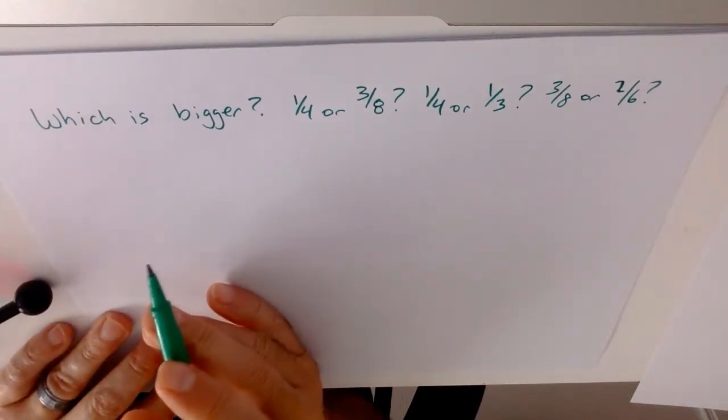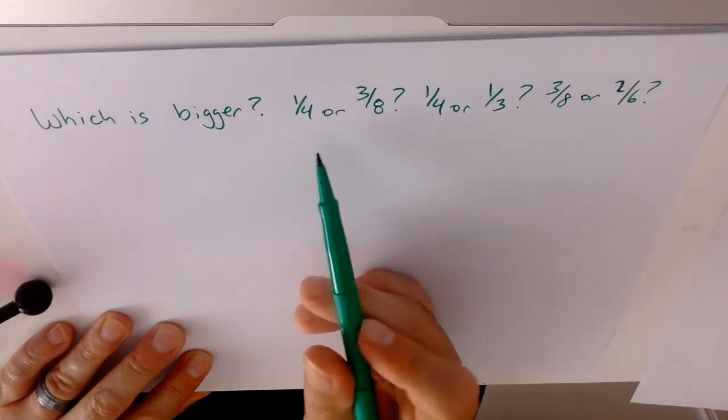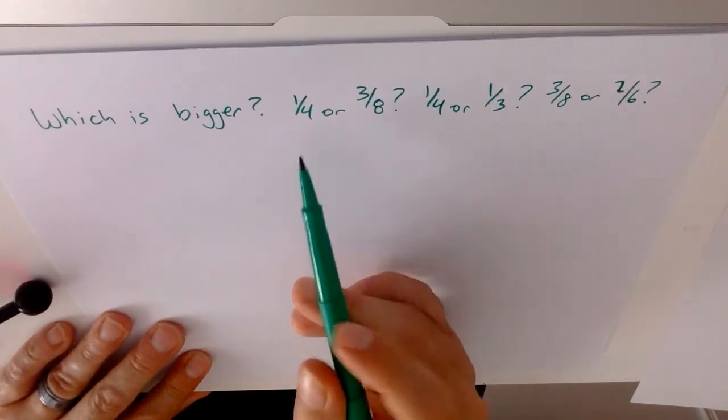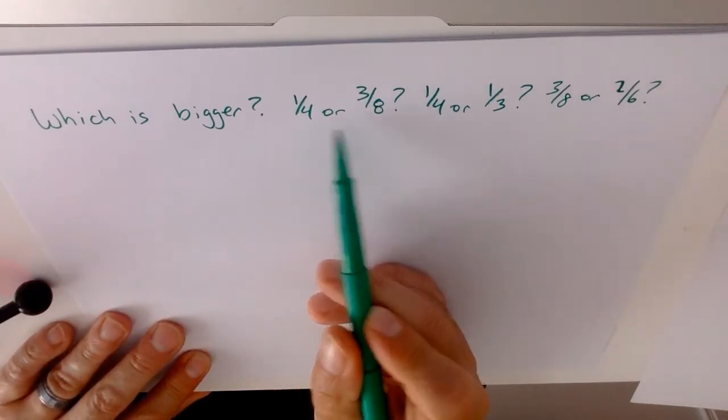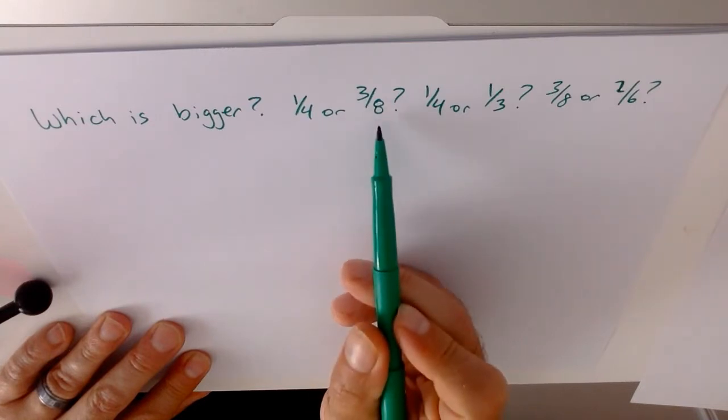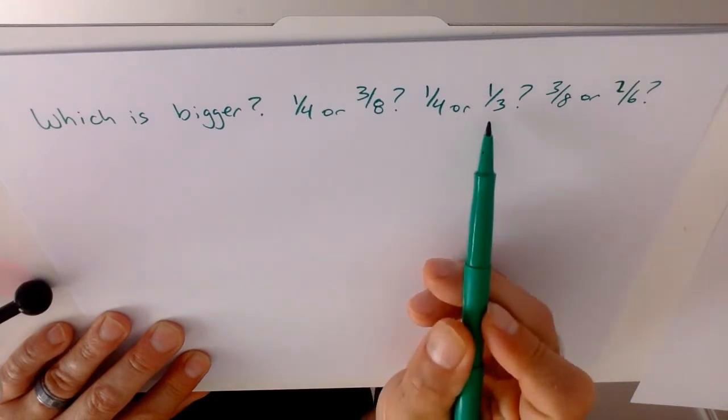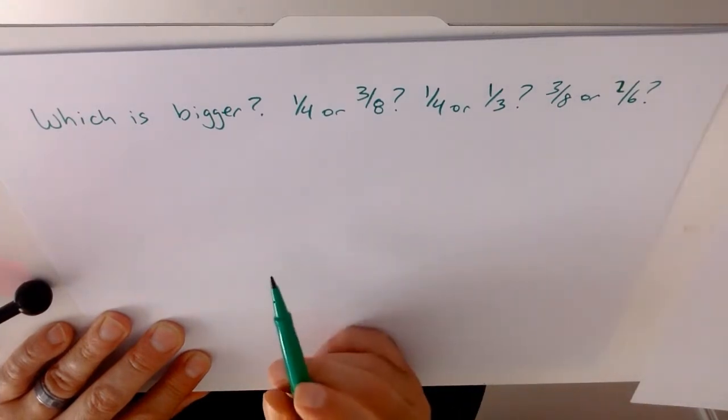What I want to show you in this video is which fraction is bigger. It's usually easy to do when you have even versus even, so 1 quarter versus 3 eighths. But it gets a lot tougher to draw these things in circles if you've got 1 quarter versus 1 third or 3 eighths versus 2 sixths.